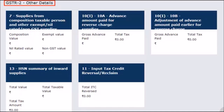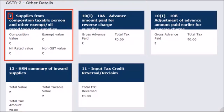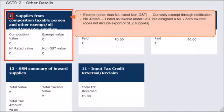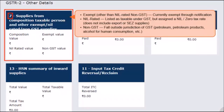Next is the GSTR-2 Other Details block. In this block, the summary details for the tax period are to be reported. The first tile includes a summary of intra-state inward supplies from composition dealers and both intra-state and inter-state inward supplies of goods and services that are either exempt, nil-rated, or non-GST. Exempt goods or services are those currently exempt through notification. Nil-rated means goods or services listed as taxable under GST but assigned a nil or zero rate of tax — this does not include zero-rated supplies such as export or SEZ supplies as notified under the IGST law. Non-GST supplies are goods and services that fall outside the jurisdiction of GST, such as petroleum products and alcohol for human consumption.